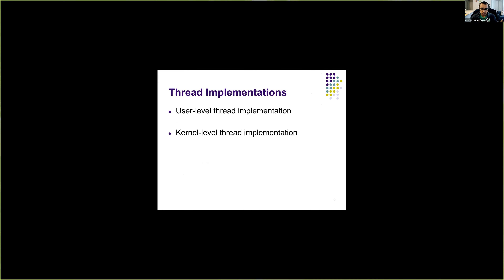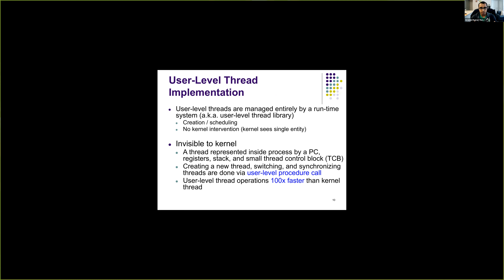There are two ways to implement threads: user-level and kernel-level. In user-level thread implementation, threads are all managed by a runtime system — a user-level thread library. Thread creation, scheduling, and switching between threads is done entirely by a library that is part of the application, with no kernel intervention whatsoever. Threads are invisible to the kernel; as far as the kernel is concerned, it is dealing with one process.